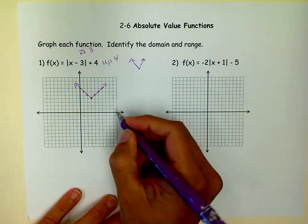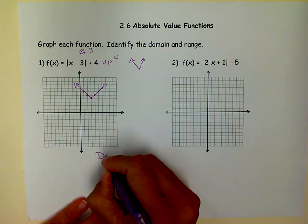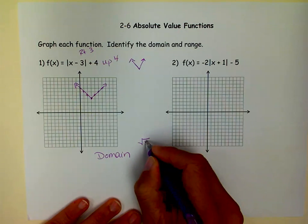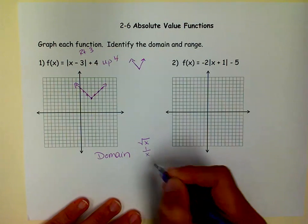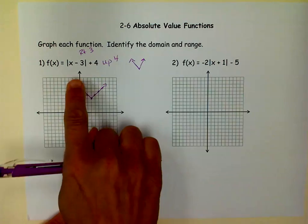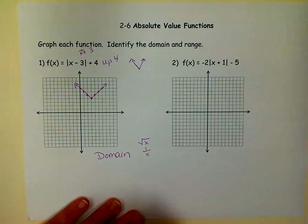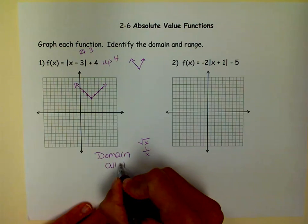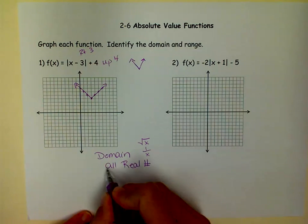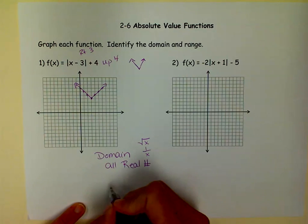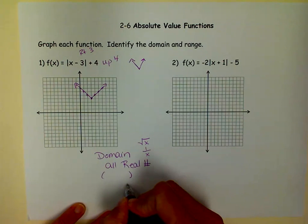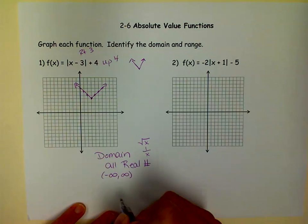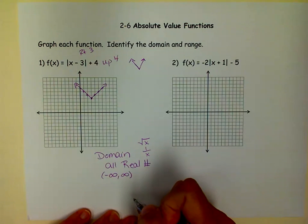Well, now we need to figure out what our domain and range is. There's only two things that limit domain, and those are square roots with a variable in them and denominators with variables in them. And you'll notice that these absolute values do not have either of those. So, our domain will be all real numbers. There are different ways to write that. Some teachers are okay with all real numbers. Some teachers want you to use interval notation. So, you would say negative infinity to positive infinity.